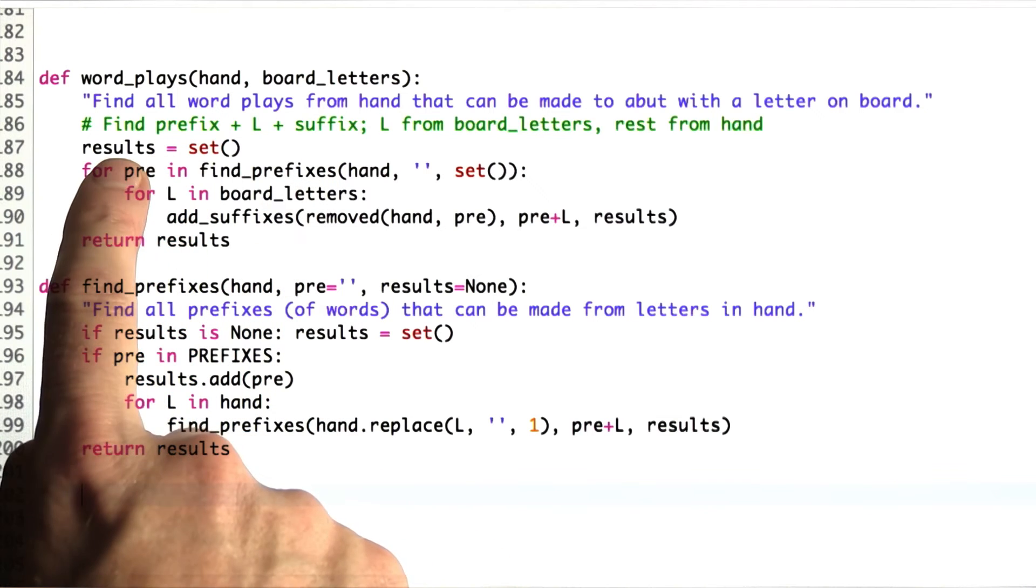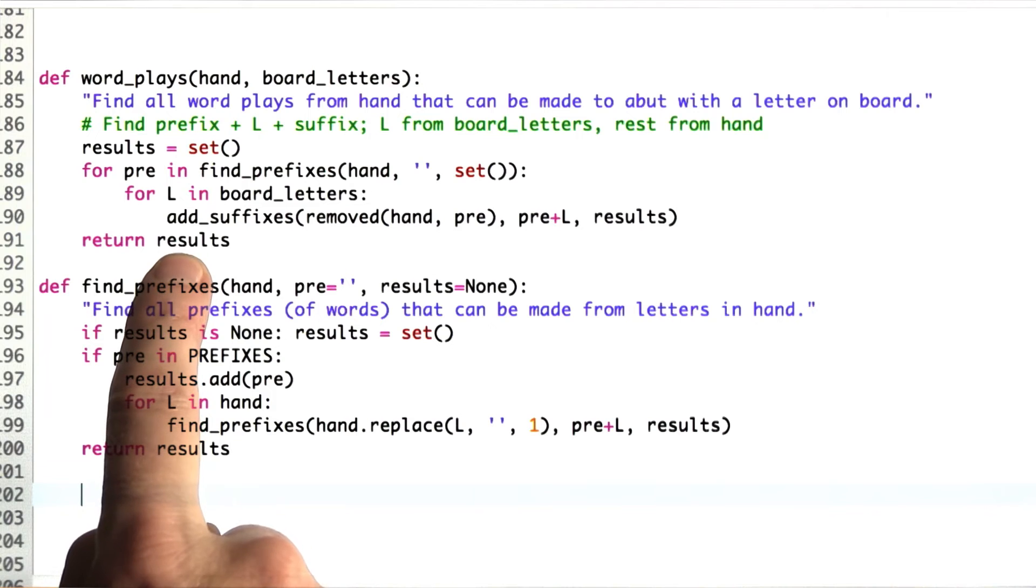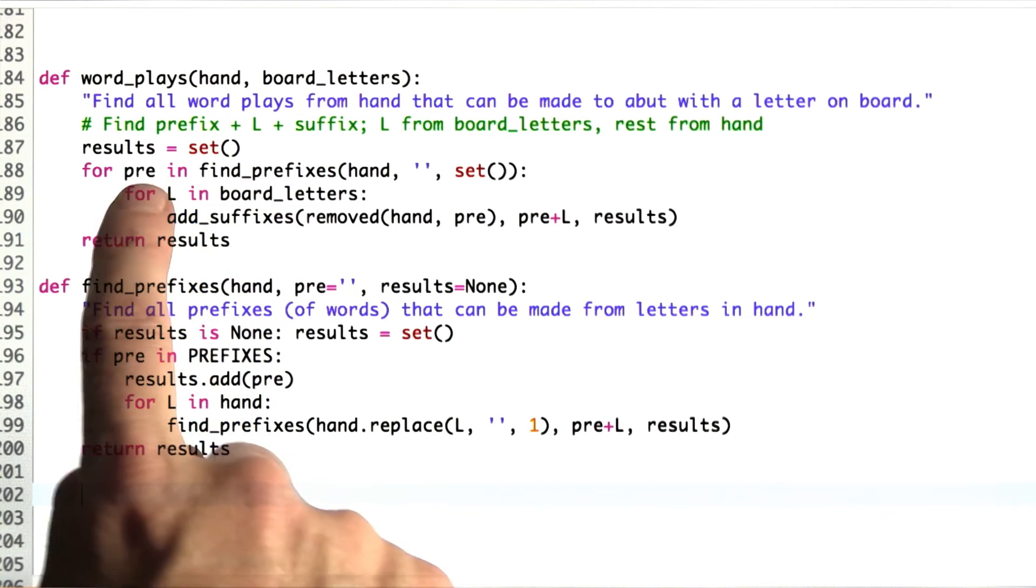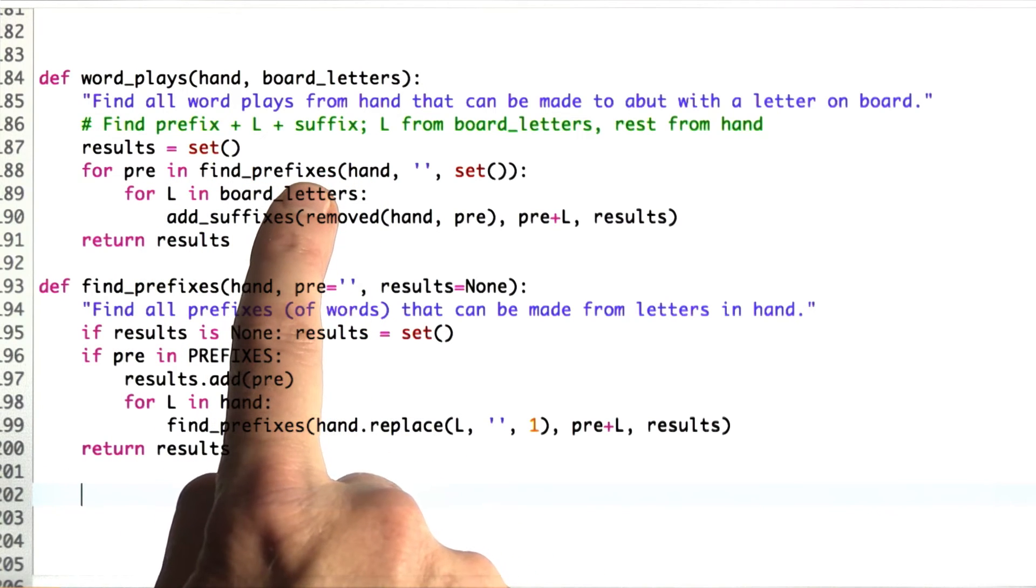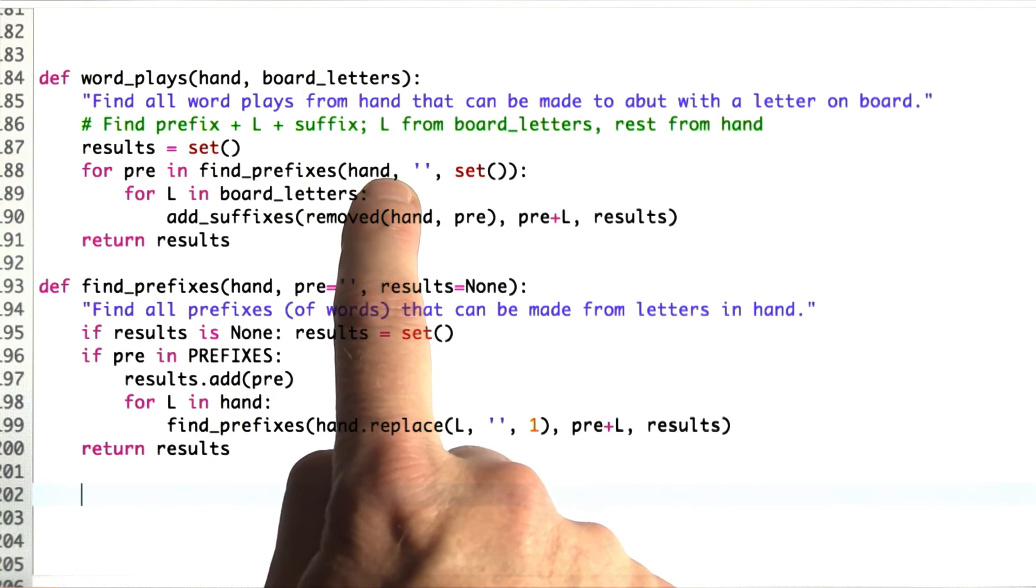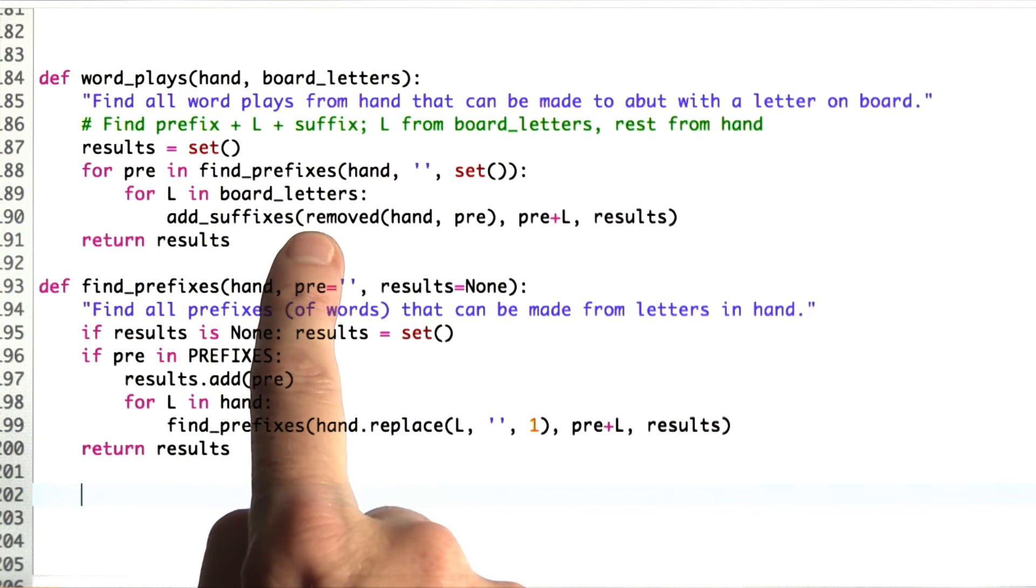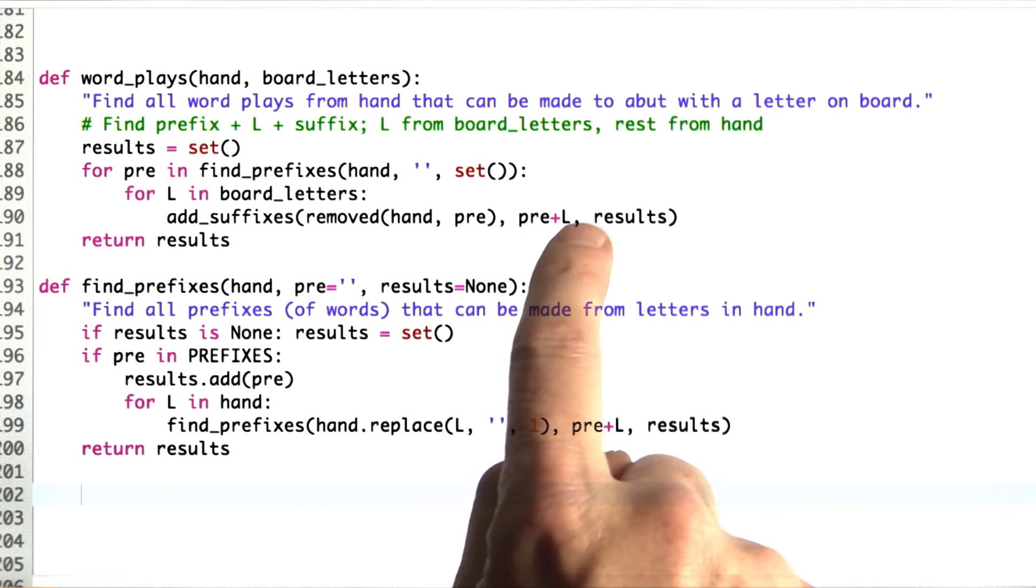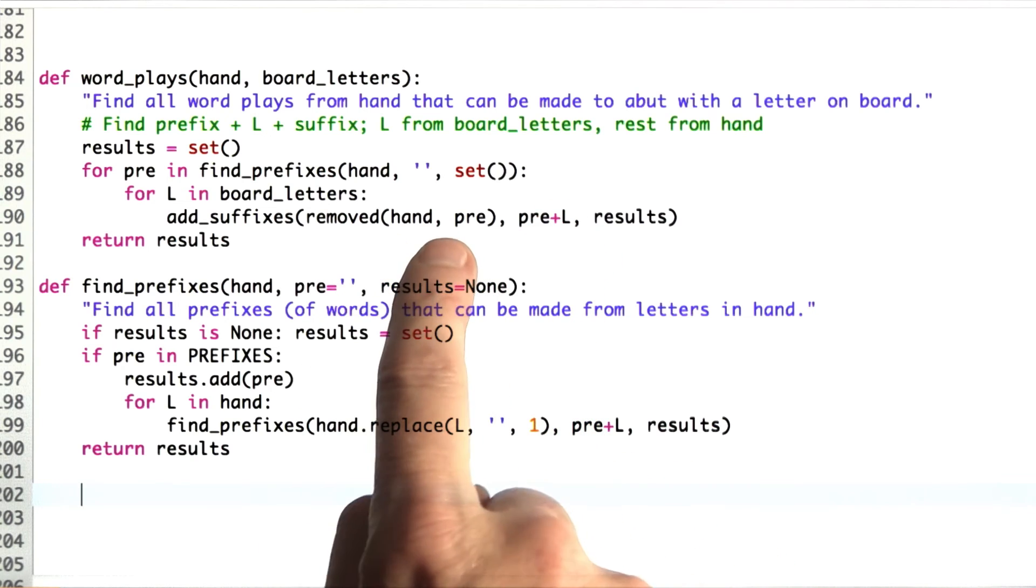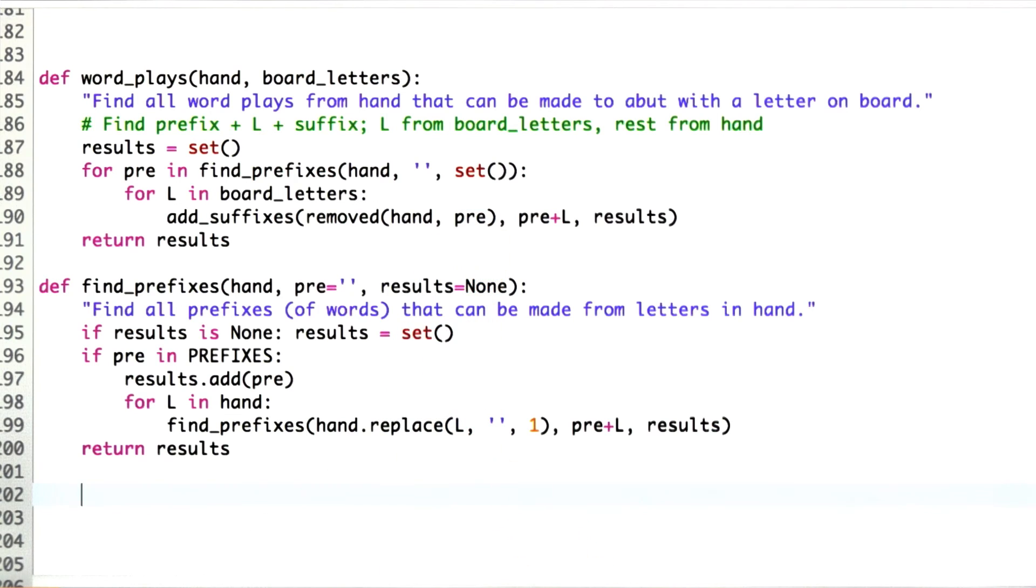We start off with an empty set of result words. In the end, we're going to return that set of result words. Then we're going to go through all the possible prefixes that come exclusively from the hand, then the possible letters on the board, and add a suffix to the prefix plus the letter on the board from the letters in the hand, except for we can no longer use the letters in the prefix.